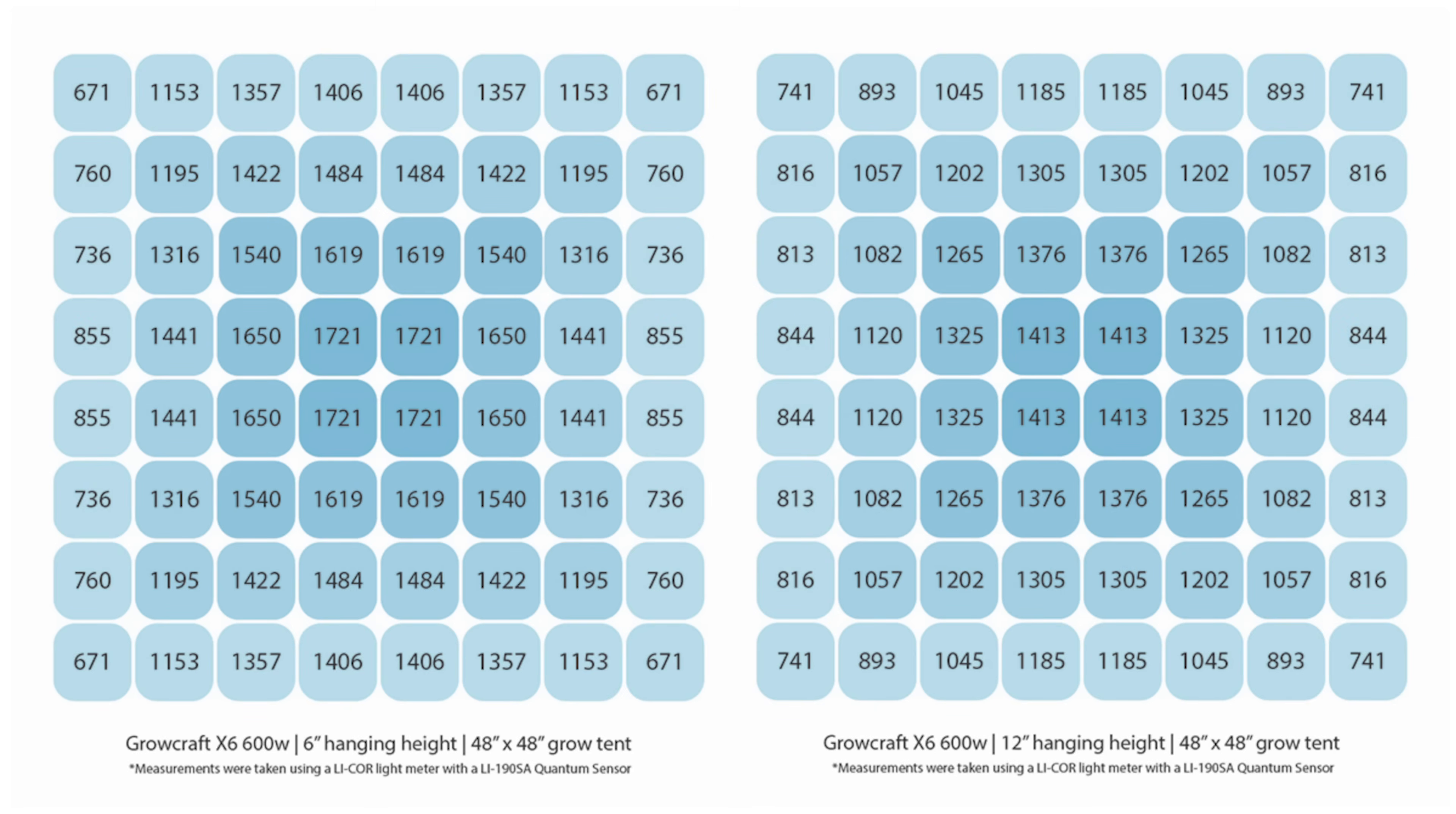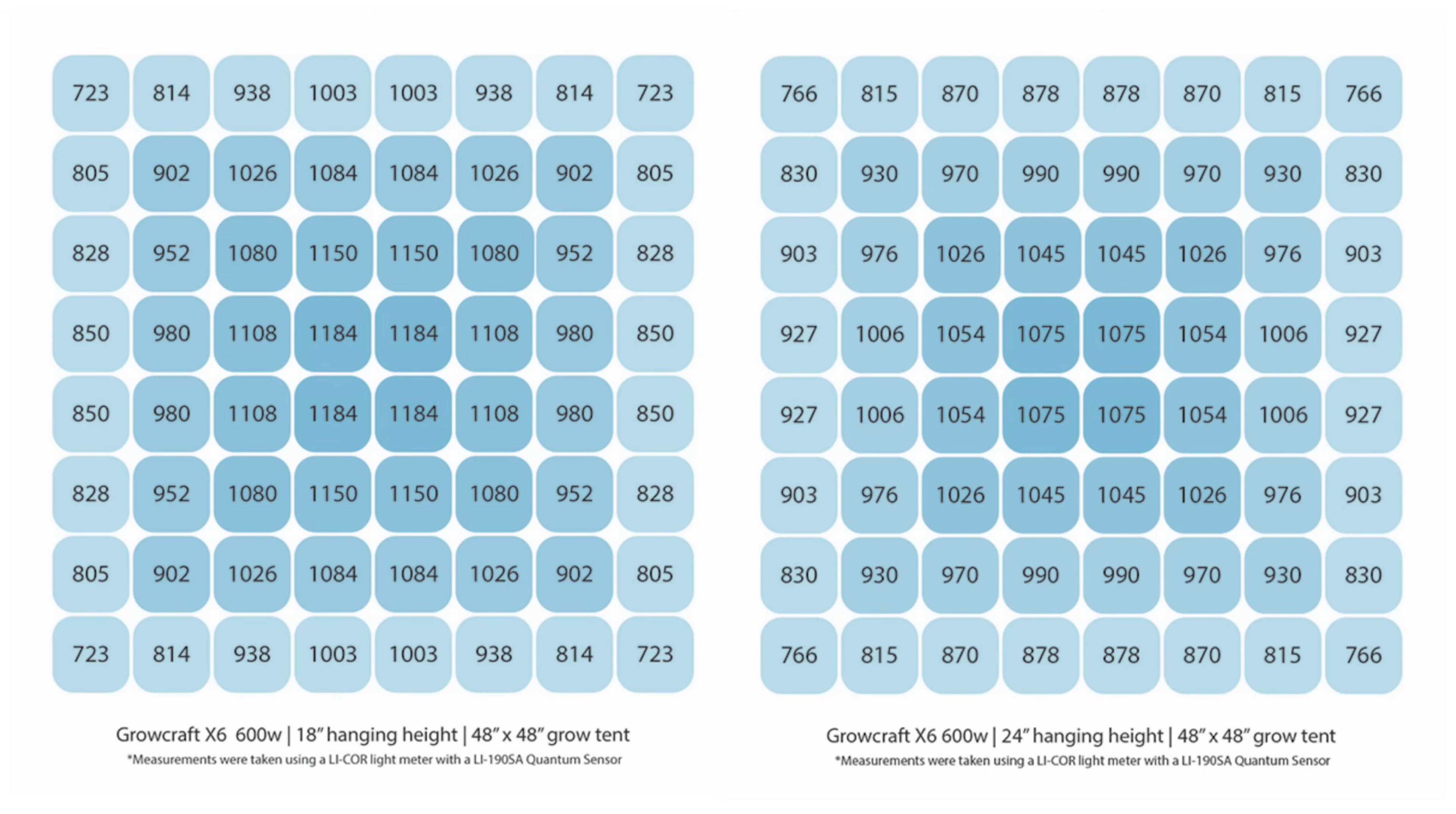Here are the PAR charts provided by Chill Tech at 6, 12, 18, and 24 inches. These readings were taken in a 4x4 grow tent and these look really really good and are more than sufficient for flowering in a 4x4 area.